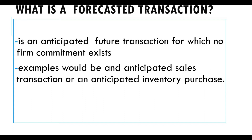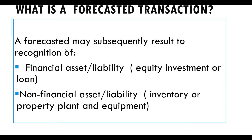In a forecasted transaction, the company is still only thinking about purchasing or selling goods — only the entity is aware of it. The entity is merely anticipating a purchase or sale of goods. Examples of a forecasted transaction are an anticipated sales transaction or an anticipated inventory purchase.